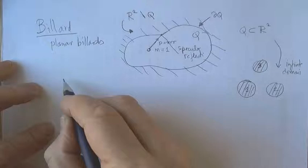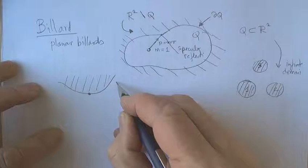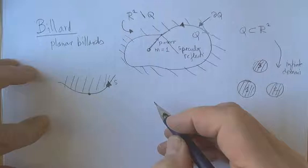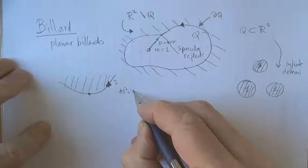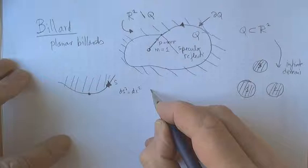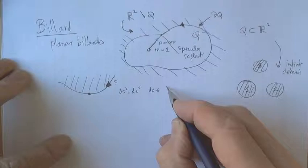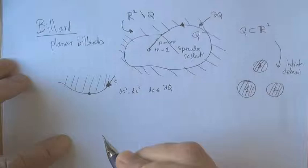So take a particle of mass m. We'll have only one particle in our program. We might just as well set mass equal to 1, moving with momentum m times the velocity of the particle, moving freely until it hits the boundary, and then it reflects specularly.